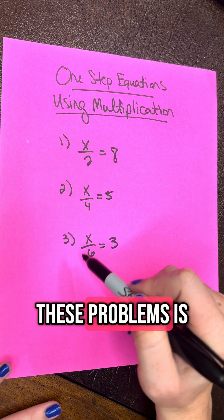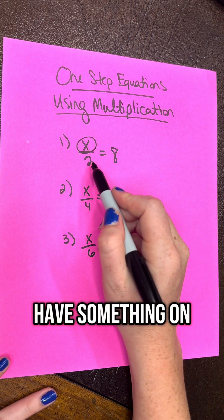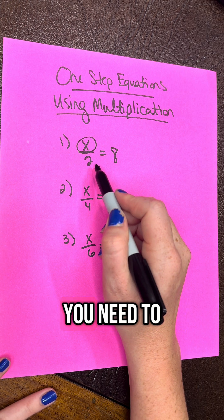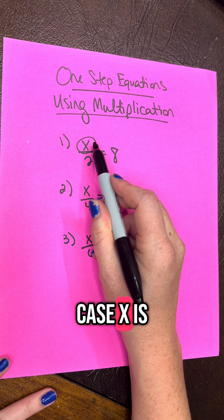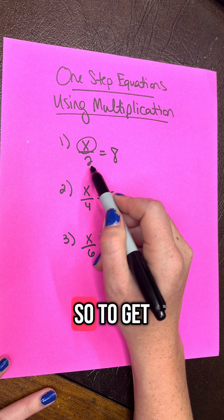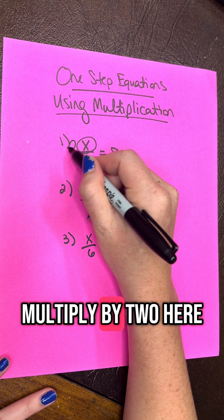The goal of these problems is you need to get x alone. So if you have something on the denominator, you need to clear that denominator. So you need to do the inverse operation. In this case, x is being divided by 2, so to get rid of this 2, we need to multiply by 2 here.